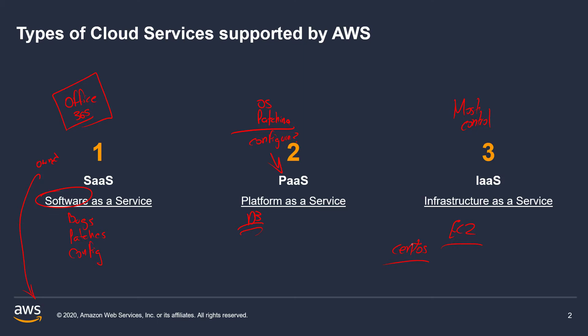These are the three core services that AWS is going to provide for us, and really any cloud provider is going to provide. Regardless of what we deploy within AWS, it's always going to fall within one of these three categories — every single option and every service we deploy. Alright, hope you enjoyed this video. I'll see you guys in the next one.